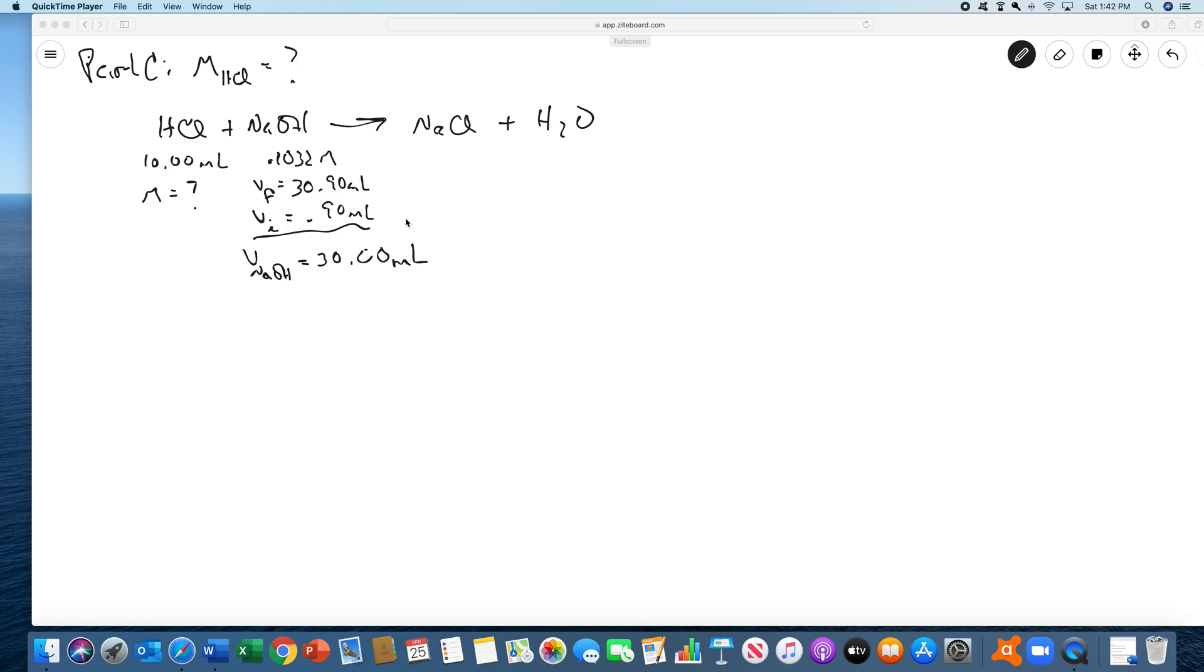By the way, in the lab manual you do three trials. We're only giving you data for one trial. So to do this, here's your balanced equation.